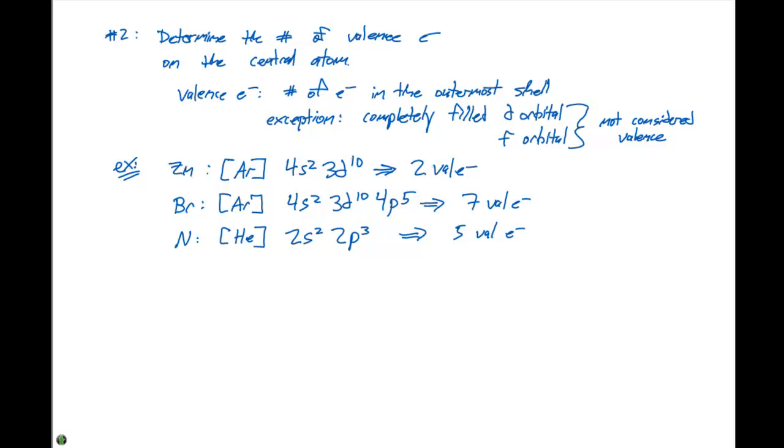So now that we've determined what the central atom is and how many valence electrons that central atom has, what we next need to determine is how many electrons that central atom needs to fill its noble gas electron configuration. Step number three is going to be to determine the number of electrons each ligand contributes to the central atom. This is going to be vital in figuring out how many ligands we need to reach a noble gas core.